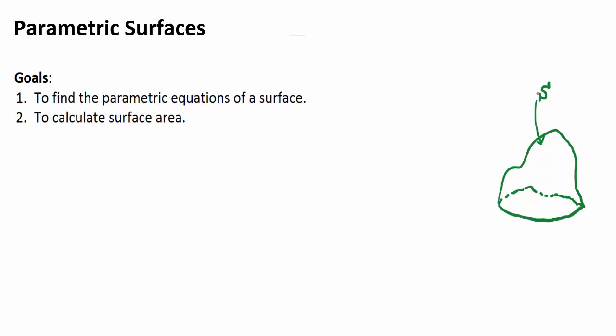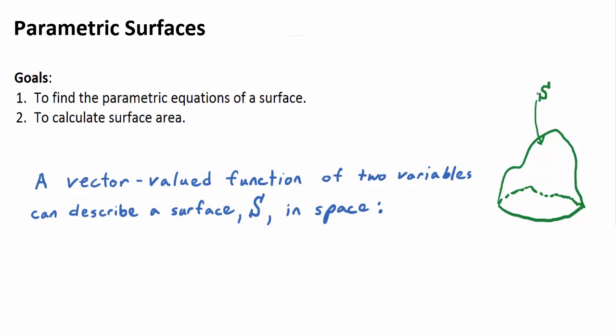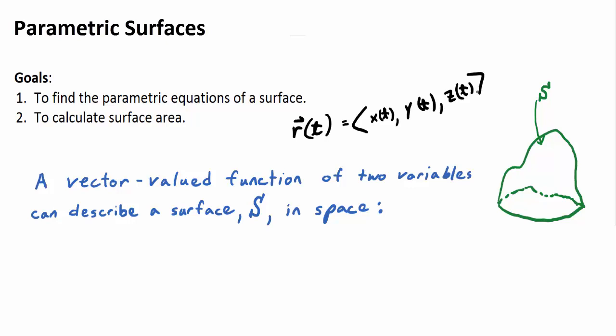Let's describe what a vector-valued function of two variables looks like. We talked in chapter one about a vector-valued function of one variable, R of T, which could have three components: X of T, Y of T, Z of T. What kind of object does this describe? It has a single input variable T — that's the parameter. Back in chapter 12, it described a curve.